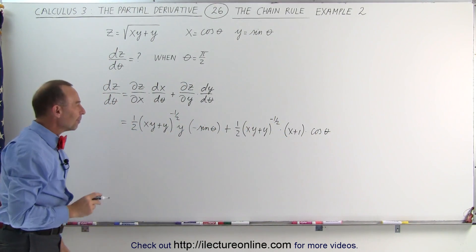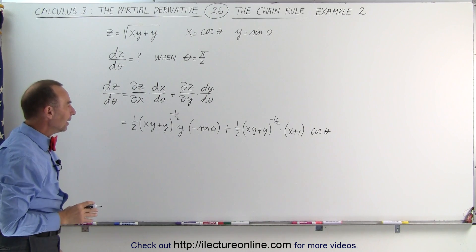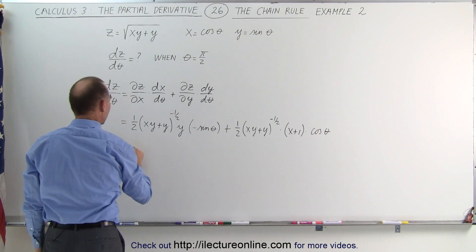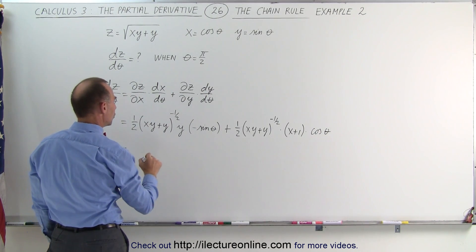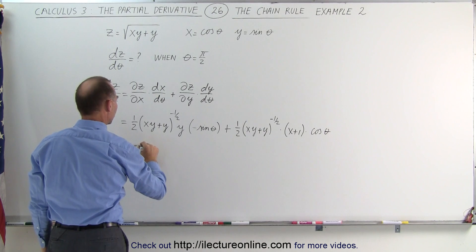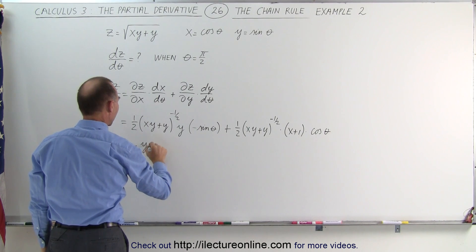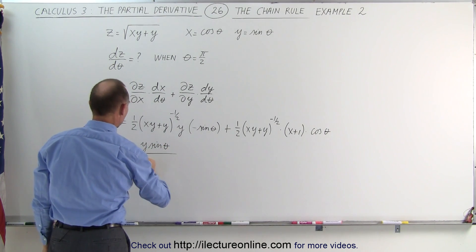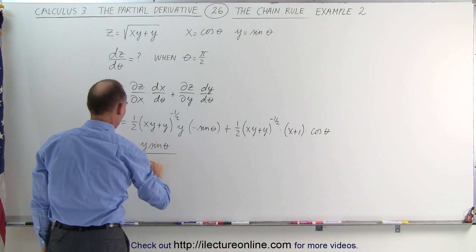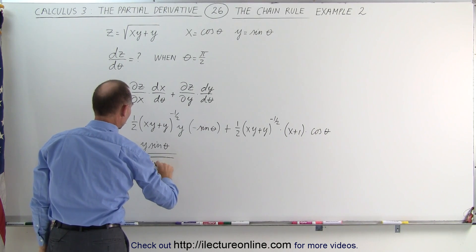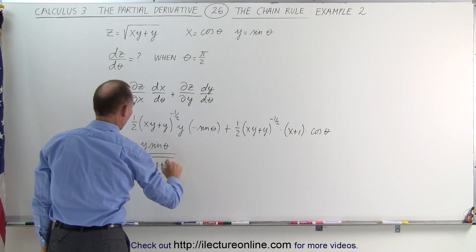Now we can simplify that a little bit. This is equal to negative y times sine of theta divided by 2 times the square root of x·y plus y.